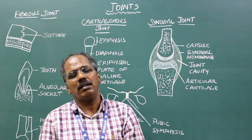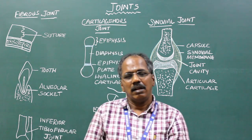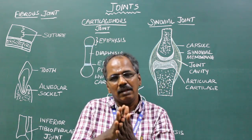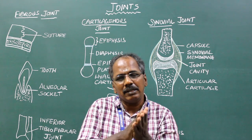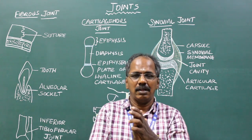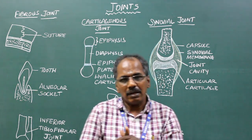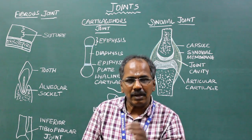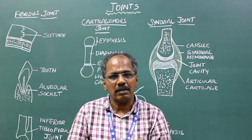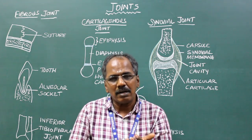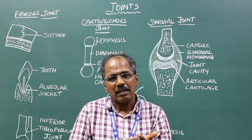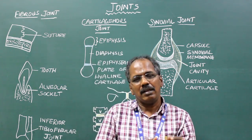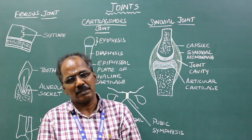Plane variety. In this, the two articular surfaces are smooth and flat, and they glide over each other. Examples include the superior tibiofibular joint, acromioclavicular joint, intercarpal joint, intermetacarpal joint, and intertarsal joints.